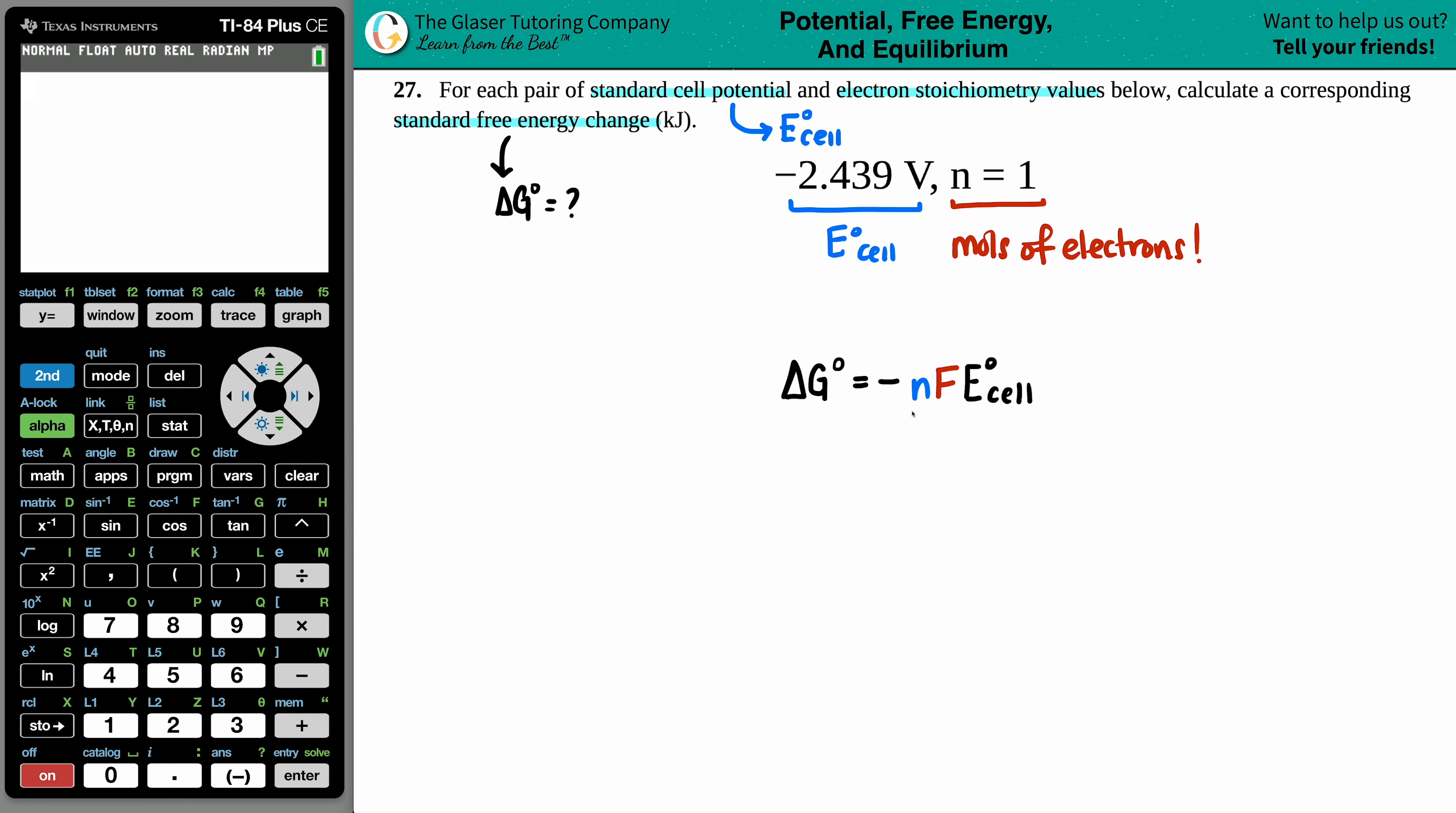Now we already know the n value. That's a one. We just said that the E cell value was the negative 2.439 volts. But what's the F value? Well, F is Faraday's constant. It's a constant number. So anytime that you're using F, it's always 96,485. And this is coulombs per mole.